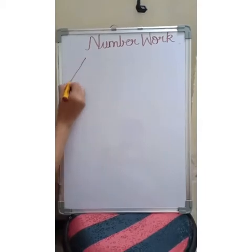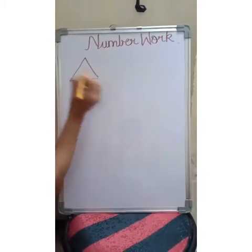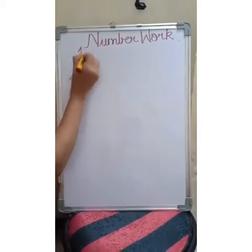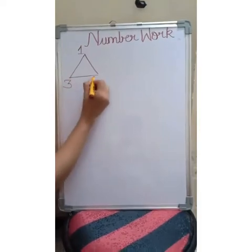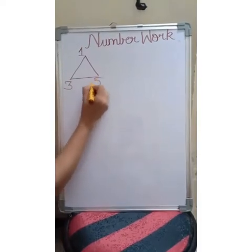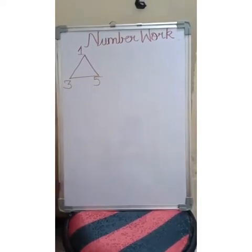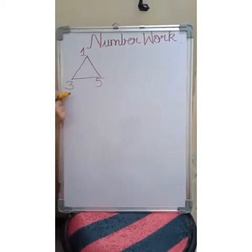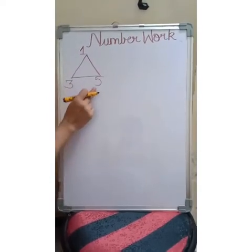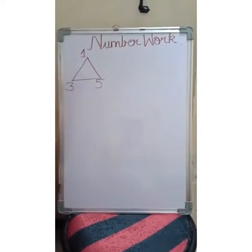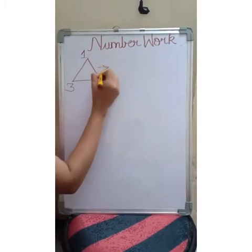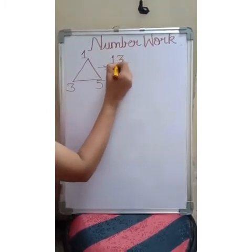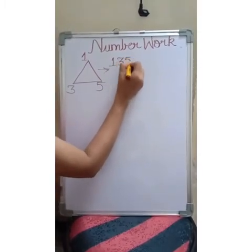For example, here I have the numbers one, three, five. Now how to make a three digit number using the digits one, three and five? So we start with one, three, five.